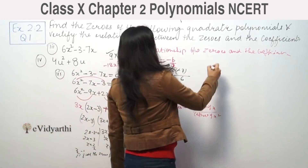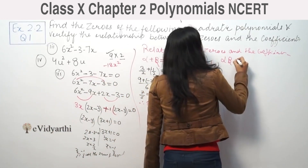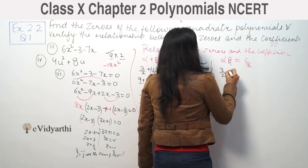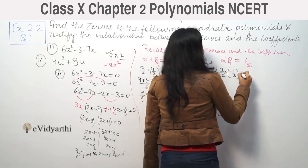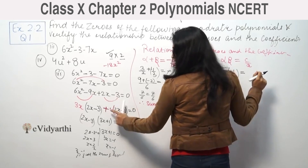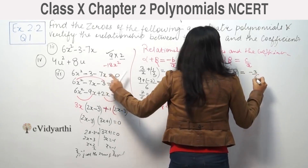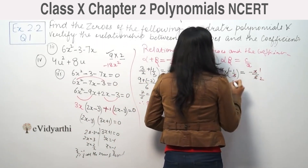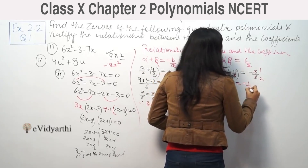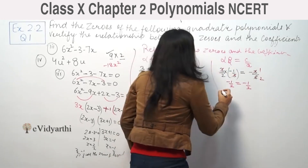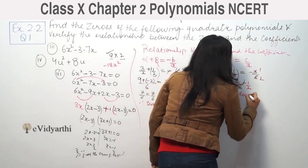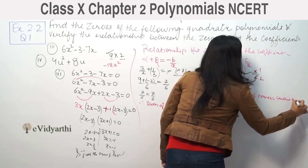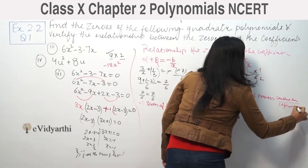Similarly, we verify the product of zeros: alpha times beta equals c by a. Alpha is 3/2 and beta is minus 1/3, so the product is 3/2 times minus 1/3, which equals minus 1/2. And c by a is minus 3 by 6, which also equals minus 1/2. Therefore product of zeros equals constant term upon coefficient of x squared.